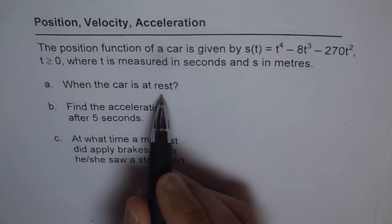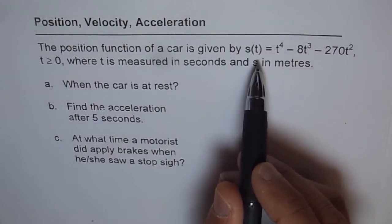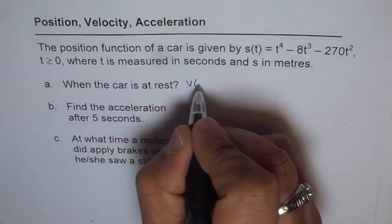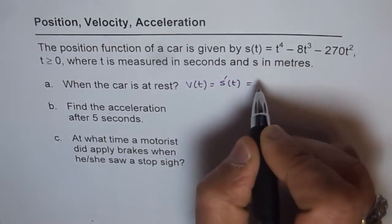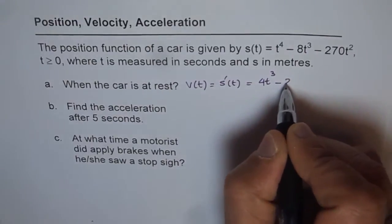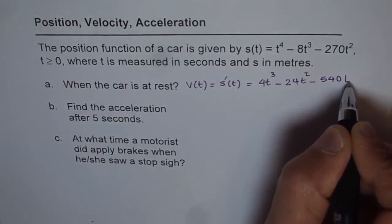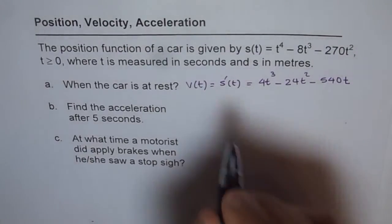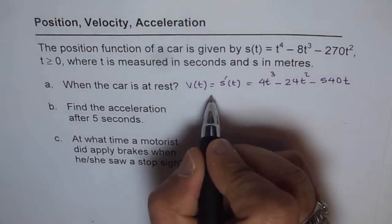When the car is at rest, the velocity is zero. So let's find the derivative of the position function, since velocity equals the derivative of the position function. The derivative gives us v(t) = 4t³ - 24t² - 540t. Now to find when velocity is zero, we factor and equate to zero.